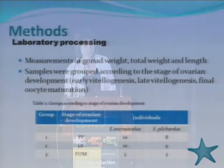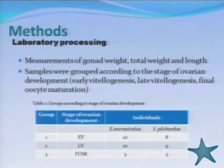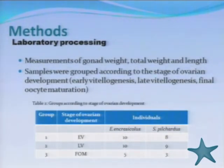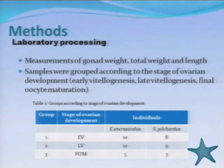The samples were transferred to the laboratory, where measurements of gonad weight, total weight, and length were made. Afterwards, samples were grouped according to the stage of ovarian development. As shown in Table 2, we had three groups: one of early vitellogenesis, one of late vitellogenesis, and one of final oocyte maturation.